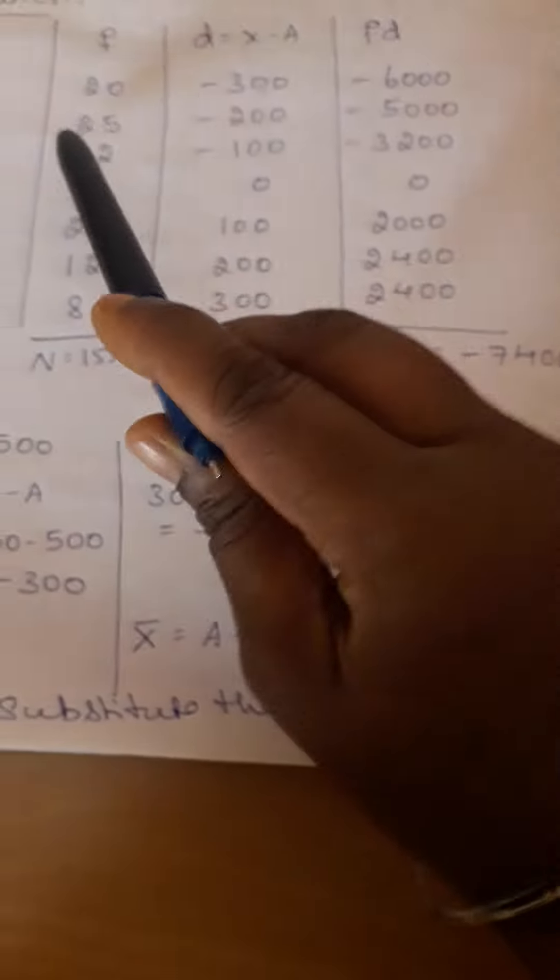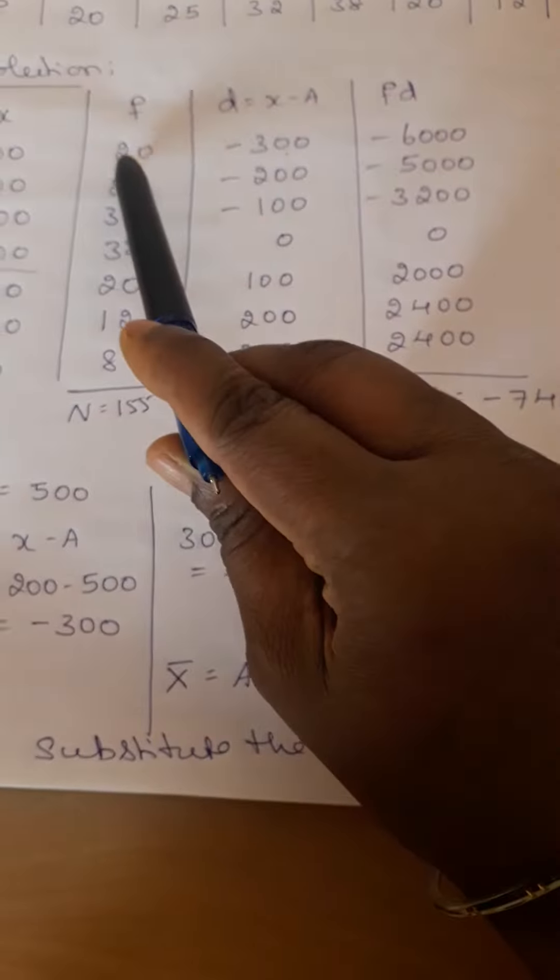If we simplify this, we get minus 300. In the same way, you have to follow fd. That is, if we multiply 20 into minus 300, we get minus 6000. In the same way, frequency 8, d value 300, if you multiply both values we get 2400.